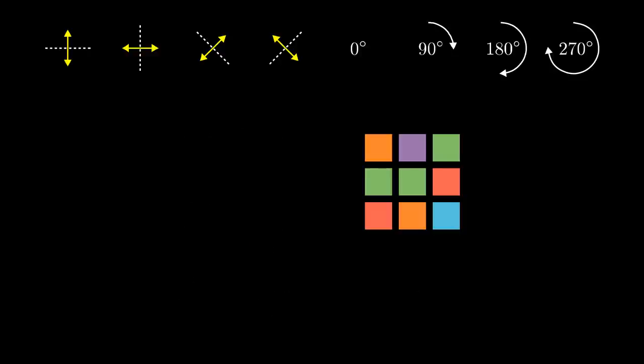To use Burnside's lemma we count symmetrical pictures for every symmetry, the pictures that don't change under the symmetry. Identity doesn't change any picture, therefore the number of symmetrical pictures is just the number of all the pictures, that is the 5 to the power of 9 we've already computed. Actually, since identity is always a symmetry, the number of all the pictures always occurs when applying Burnside's lemma.